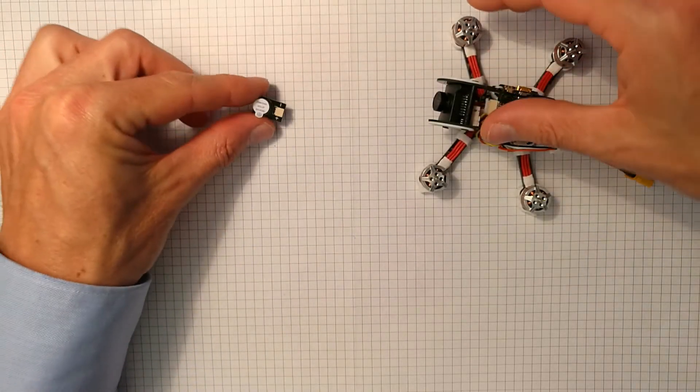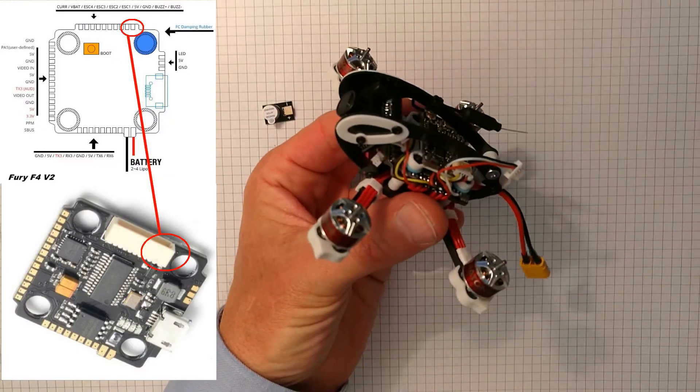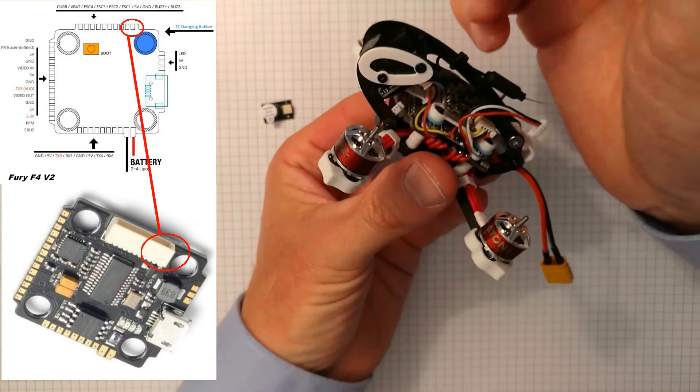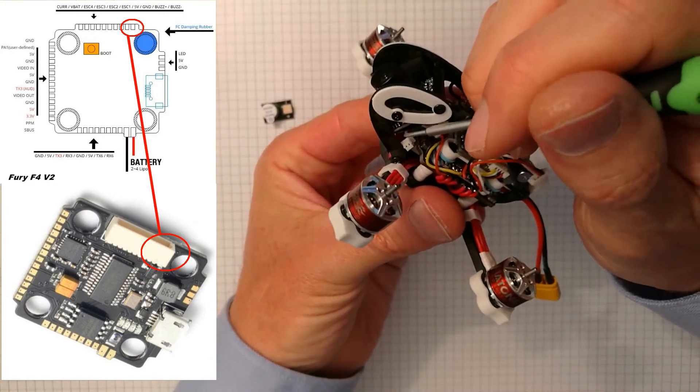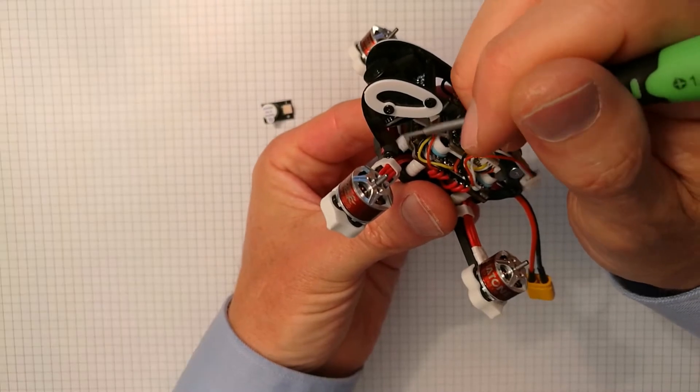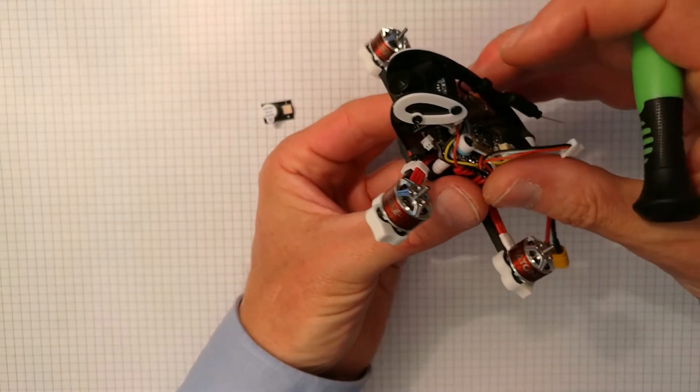And you can see this little JST socket here. Now, conveniently, Diatone broke out the buzzer pins from the flight controller to a cable, which is led to the front here. You can see that little plug. And now this can be easily connected to the buzzer. So there you go. That's a good idea.